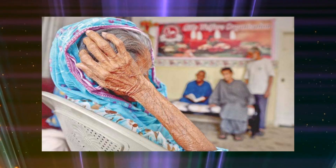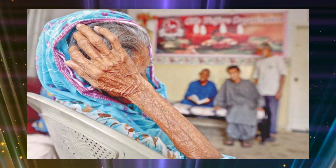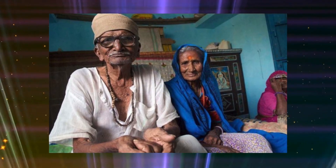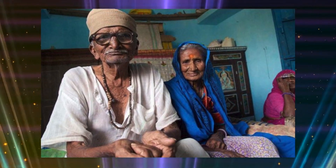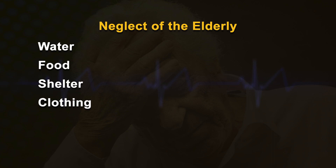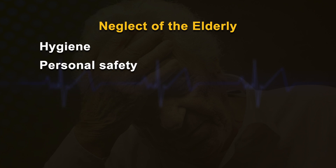Emotional abuse can also involve giving the elderly person the silent treatment or keeping them socially isolated. Neglect of the elderly usually means refusing or failing to provide the elder with the necessities of life such as water, food, shelter, clothing, medicine, hygiene, or personal safety and comfort. It may also include failing to care for an elder by someone who has obligations to give care, failing to pay for home health care services, or failing to provide essential care.